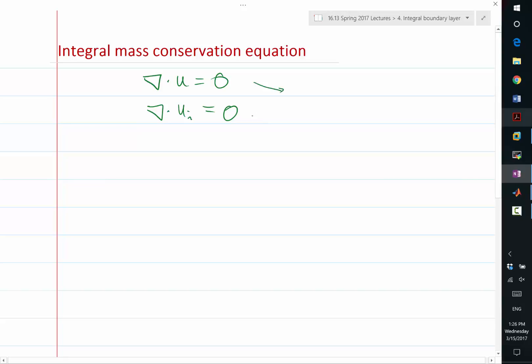So how about the divergence of the defect, which I consider as ui minus u, the difference between the inviscid velocity and viscous velocity? It's again equal to zero. The divergence is a linear operator, so the equation satisfies the principle of superposition.